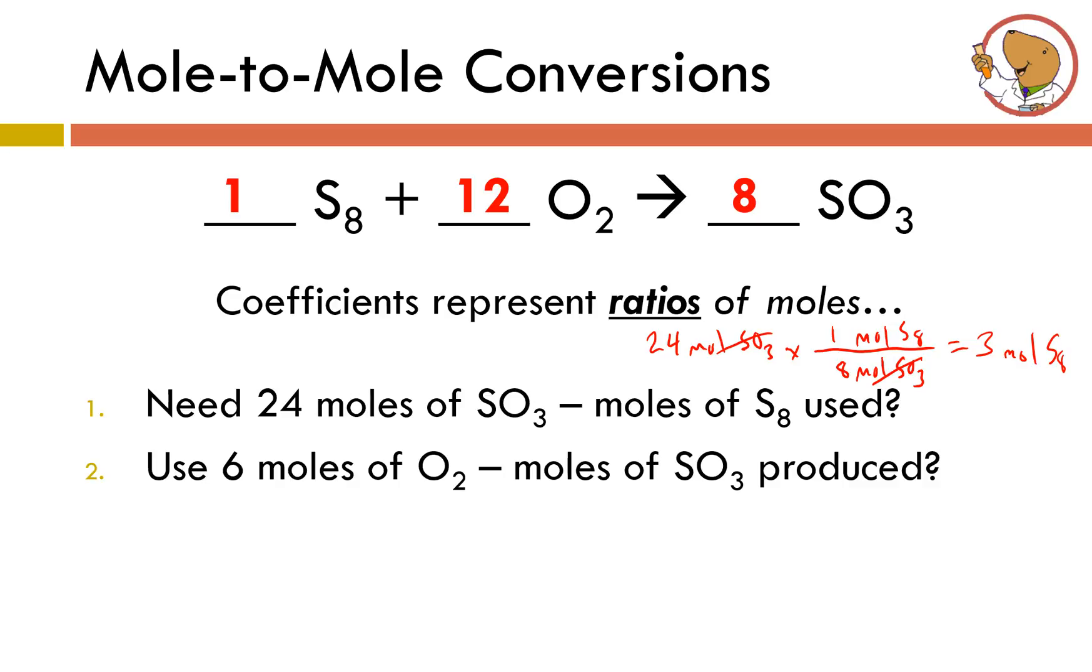Let's say you use 6 moles of O2. How many moles of SO3 can you produce? We go back to the chemical equation. We're in a 1 to 12 to 8 ratio. I've cut my number of moles of O2 in half. So I'm probably going to have to do the same with the amount of sulfur trioxide that could be produced. So in this case, I could only make 4 moles of SO3.